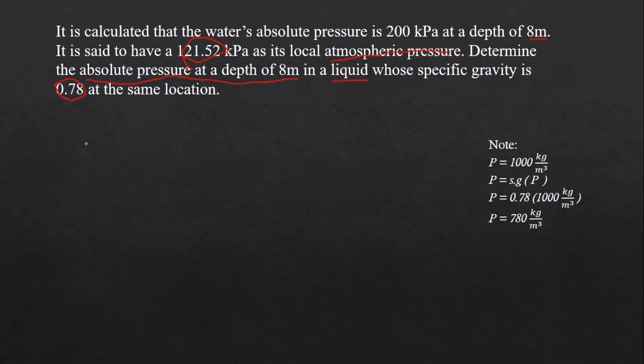The formula for finding the absolute pressure is like this: P_abs is equal to the atmospheric pressure plus P_h. We all know that P_h is equal to ρgh, the density times the gravity times the height.